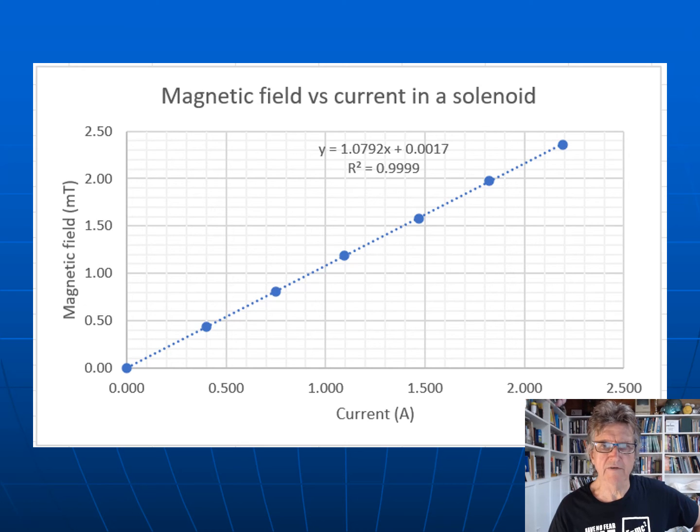Not much in the way of error bars there. I worked out the gradient which is 1.0792. Now that's B on I. If you think of the equation for a solenoid, B equals N K I, or in terms of mu you'd have to use a formula. But you can work out the value of N, the number of turns per metre, using that formula and see what you get.